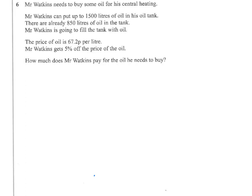Mr. Watkins needs to buy some oil for his central heating. He can put up to 1,500 litres of oil in his tank. He's already got 850 in the tank, and he's going to fill the tank with oil. The price of oil is 67.2 pence per litre. He gets 5% off the price of oil. So, how much does Mr. Watkins pay for the oil he needs to buy?